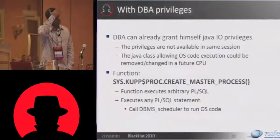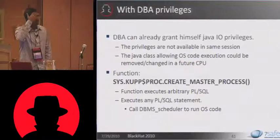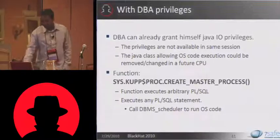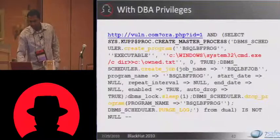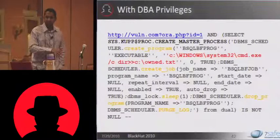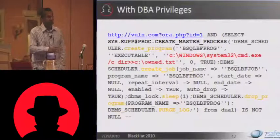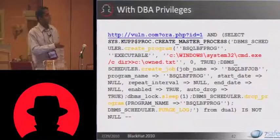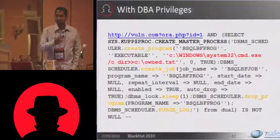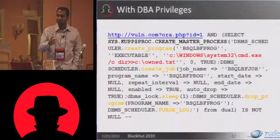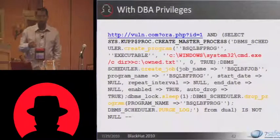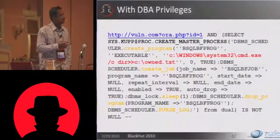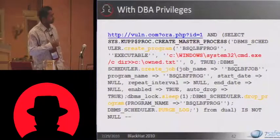So this create_master_process function lets you execute arbitrary PLSQL. As an argument to this function, we issue a PLSQL in which we call DBMS scheduler and schedule a job and then execute a job. The job is basically to execute OS code. Simple as that.